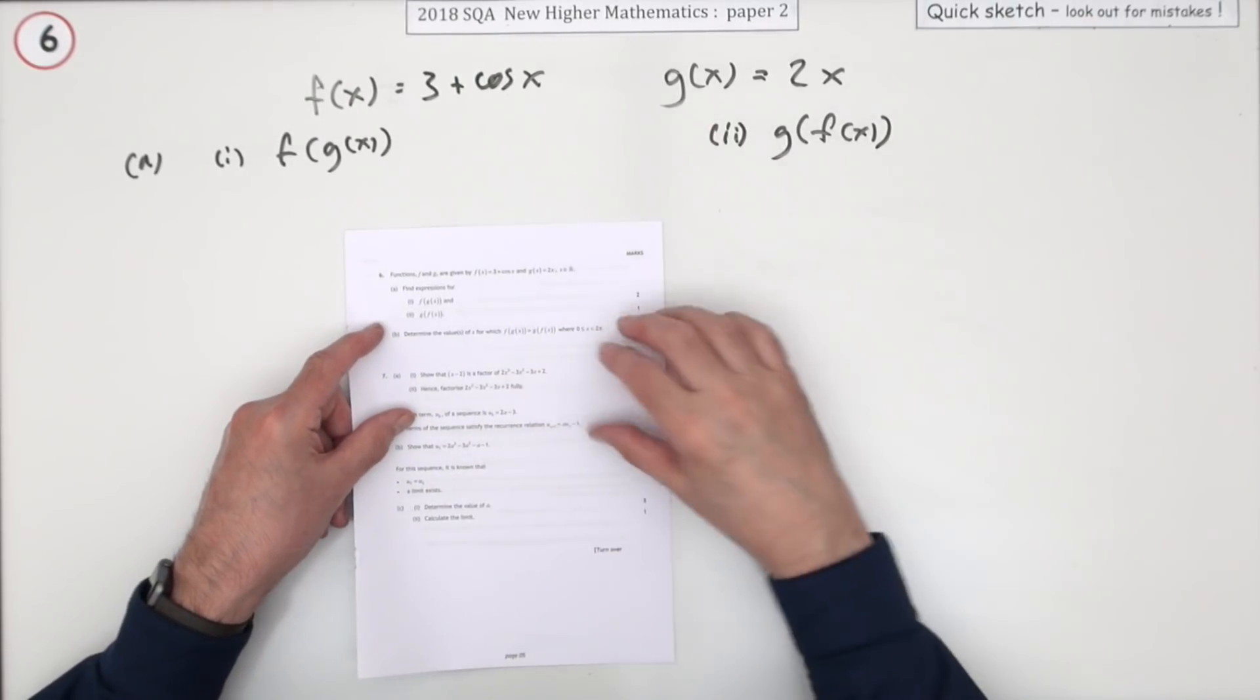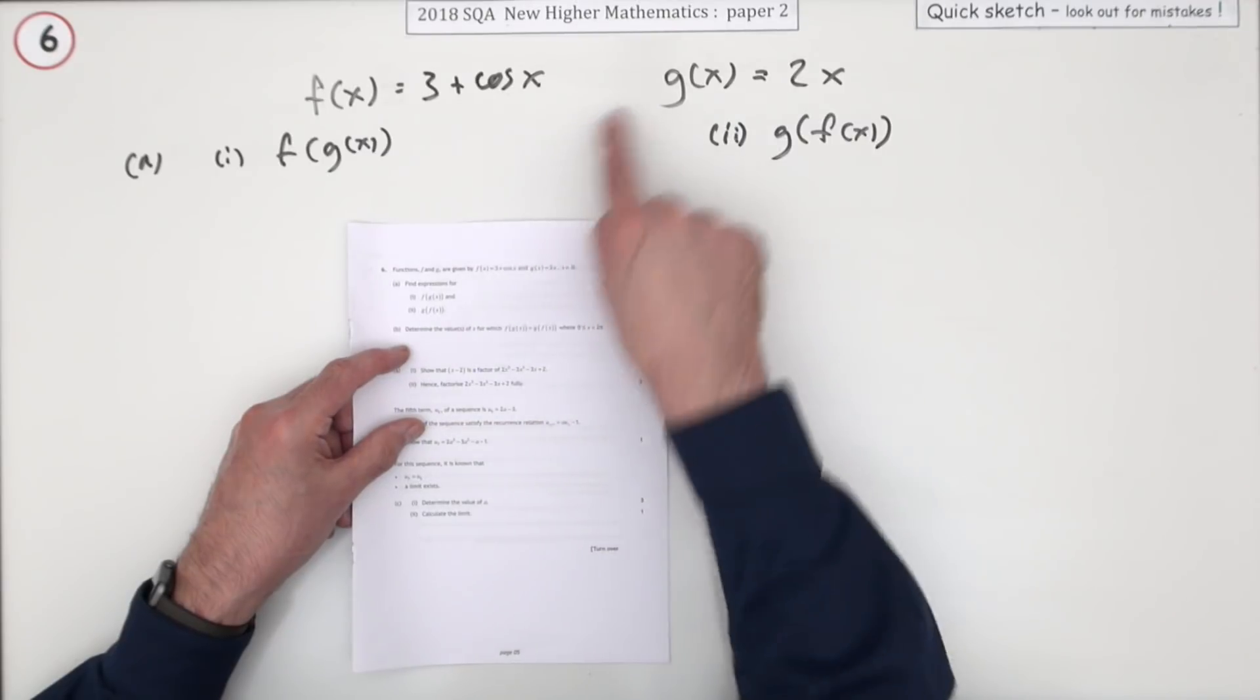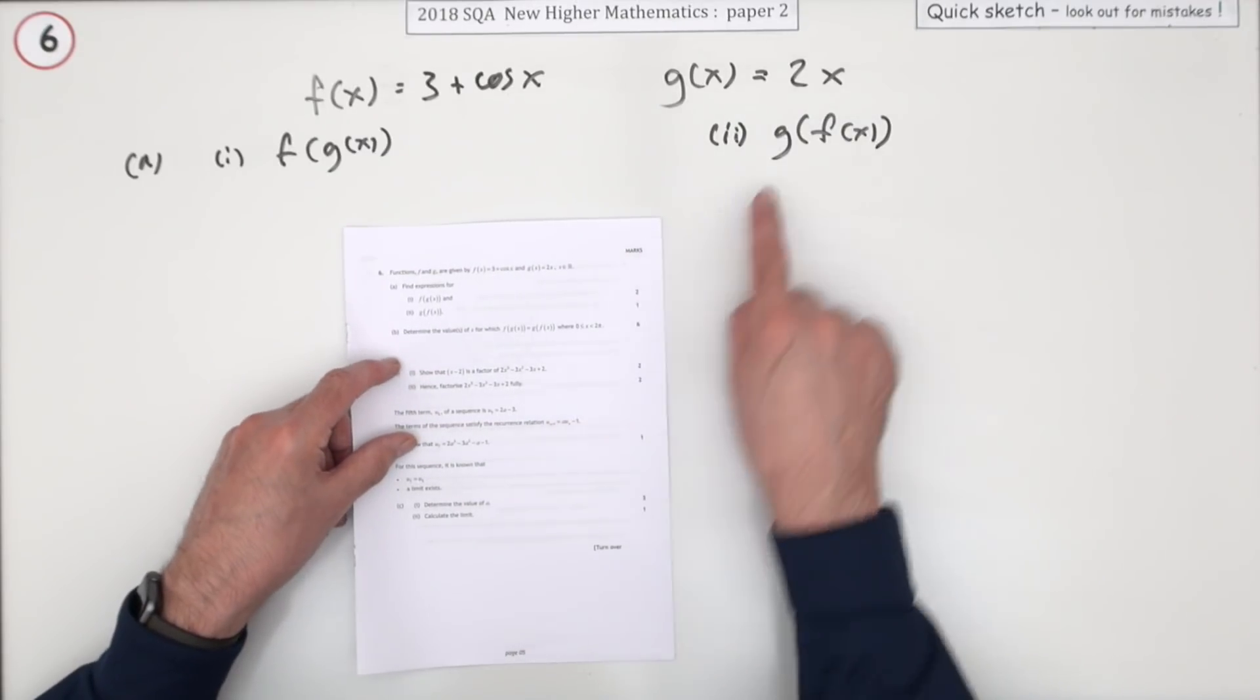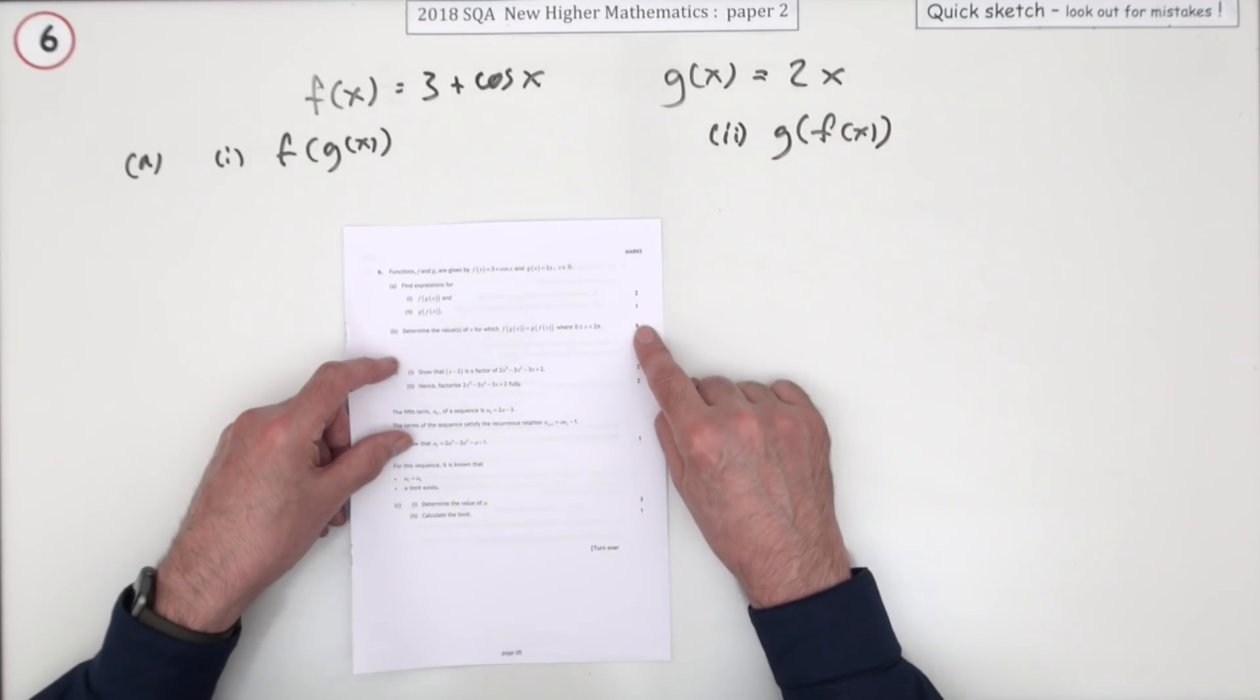Number six then from paper two of the 2018, nine marks here for composition of functions. That's the small part of it, but you can see with the cosines and the 2x, these six marks at the end are going to be for a double angle equation.